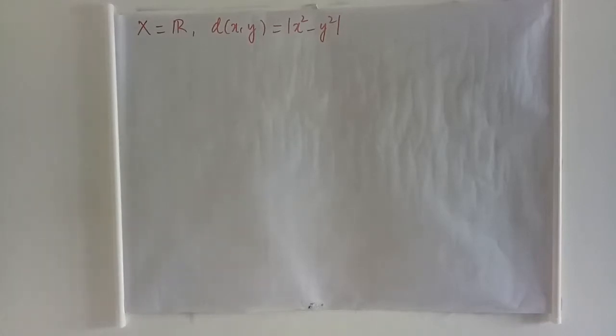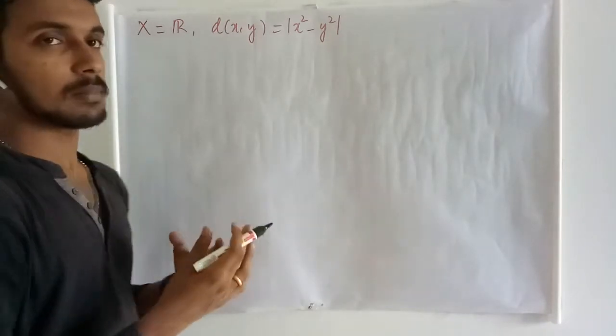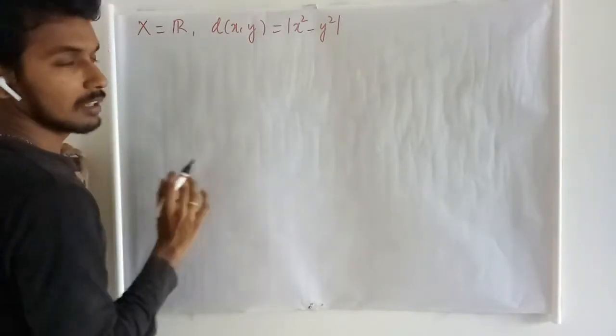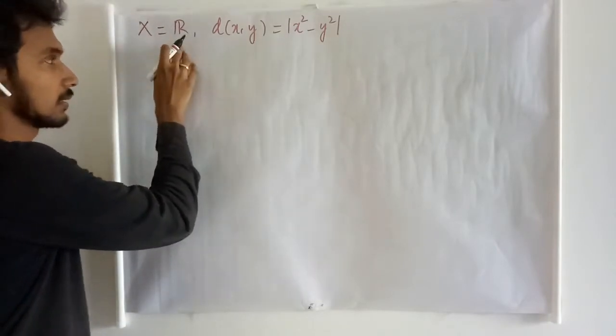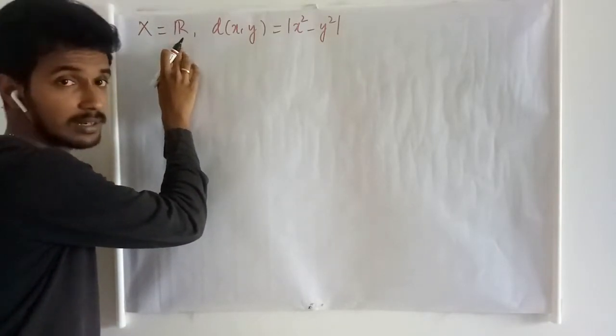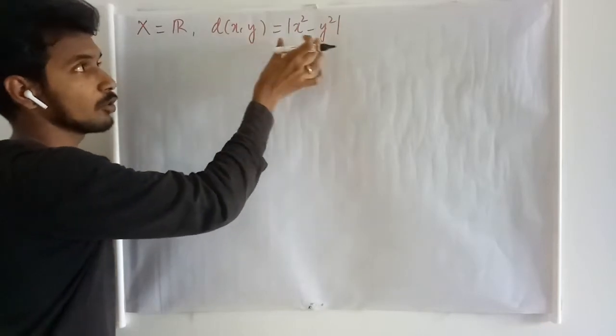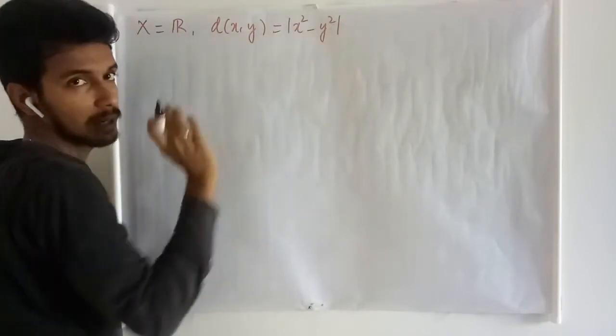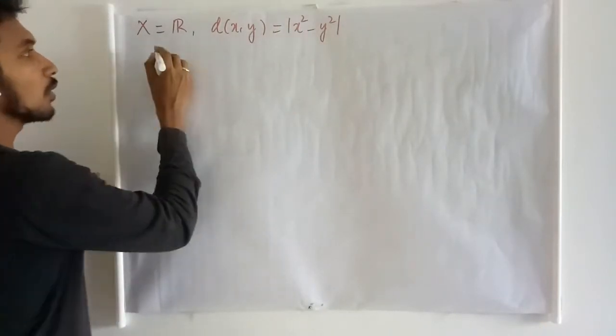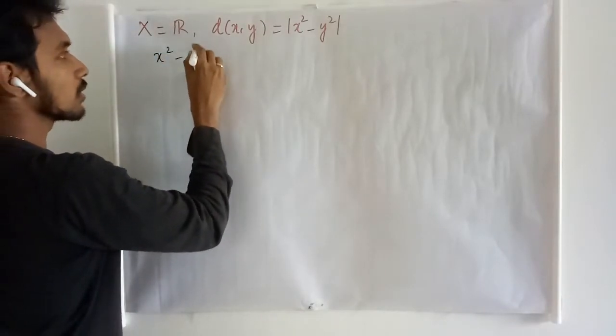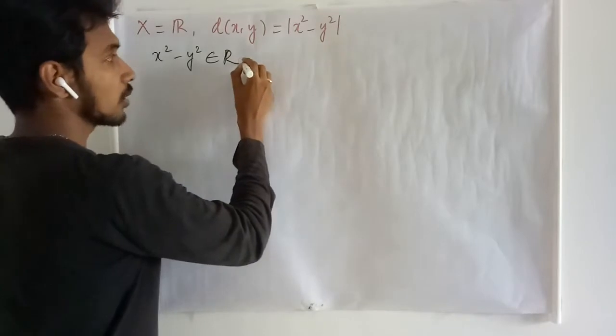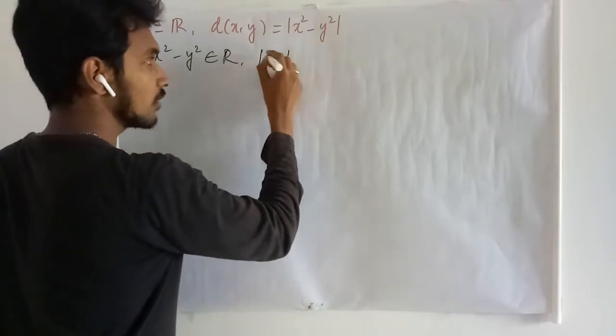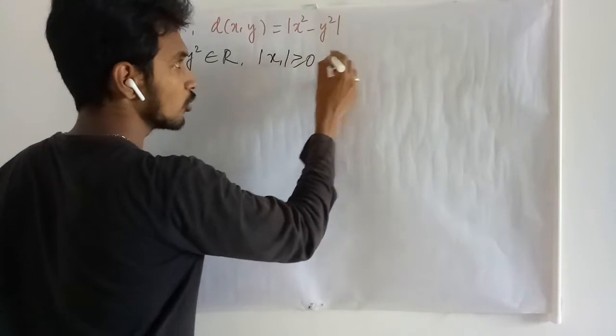Continuation to the previous lectures. In this lecture, we are going to do a problem on metric spaces. We are given the set R, that is the set of all real numbers, and the metric is defined to be the absolute value of x squared minus y squared. We know that x squared minus y squared is also a member of R.